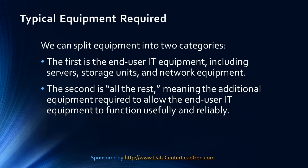Typical equipment required: we can split equipment into two categories. The first is the end-user IT equipment, including servers, storage units, and network equipment. End-user enterprises may choose to organize this in different ways according to the performance and availability they require — for instance, scale-up to build a bigger server, or scale-out to add additional servers, are two typical choices.